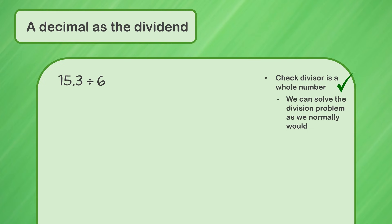We can go straight ahead and solve the division problem as we normally would. I'm going to rewrite it like this, so I can solve it using short division. Since 15.3 has a decimal, we'll bring it straight up into our answer. Now we work through our division problem as normal. How many times does 6 go into 15? 6 goes into 15 2 times. Write 2 above the 5.